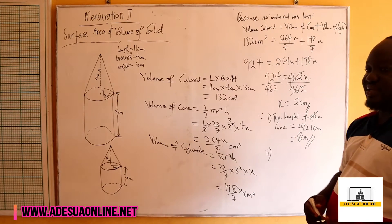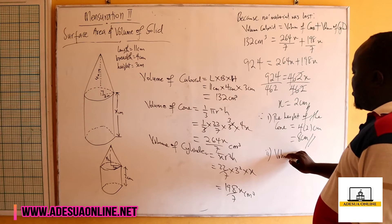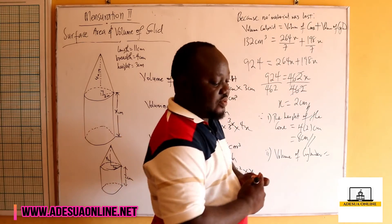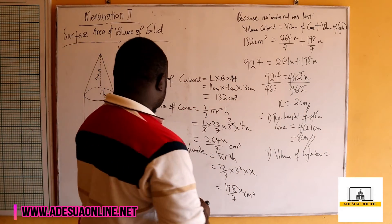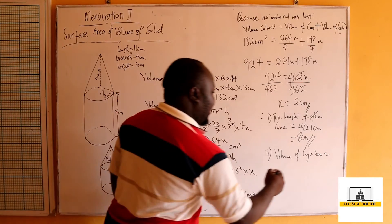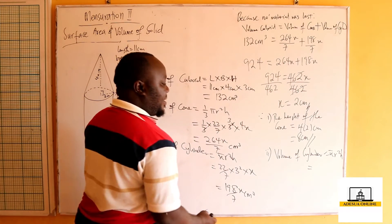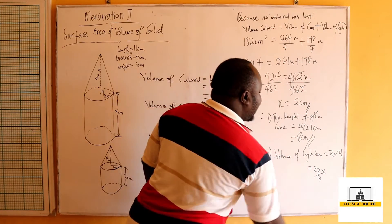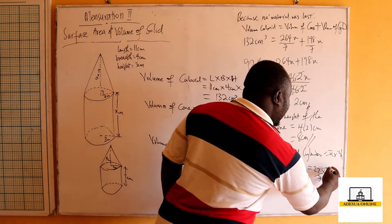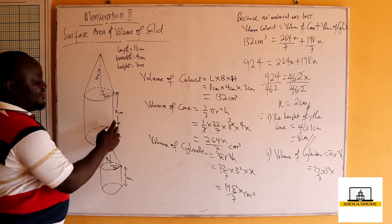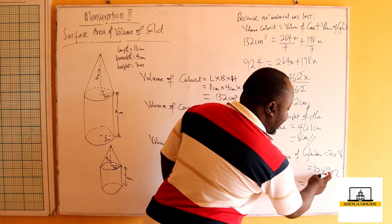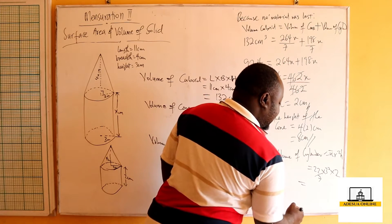For part b, the volume of the cylinder equals pi r squared h. Pi is 22 over 7, the radius is 3 centimeters, so we have 3 squared times the height of the cylinder, which is x equals 2. This gives us 9 times 2 times 22 over 7.